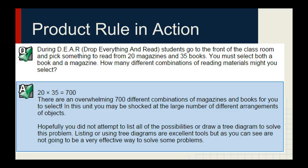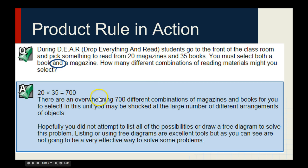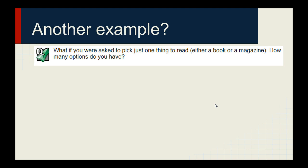During DEAR — Drop Everything And Read — students pick something to read. There is a bin with 20 magazines and 35 books, and one person must select both a book and a magazine. How many different combinations of reading materials might you select? The clue here is 'both a book and a magazine' — the keyword AND — so we use the product rule: 20 times 35 equals 700. There are 700 combinations of magazines and books to select. You don't need a tree diagram or listing for that.